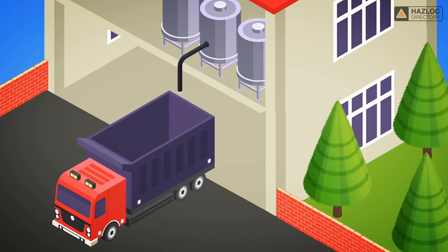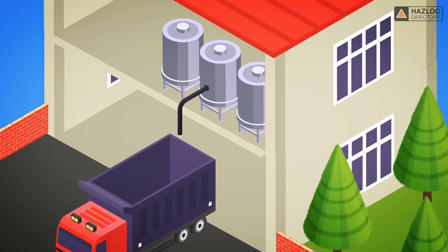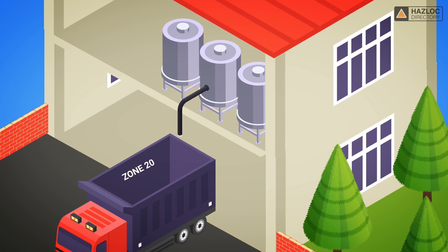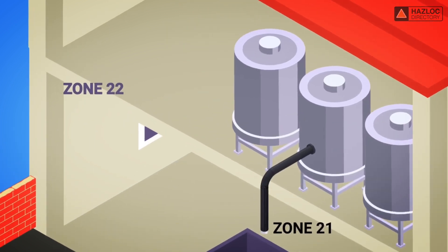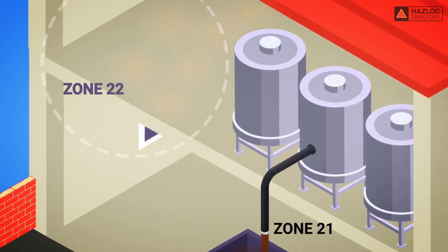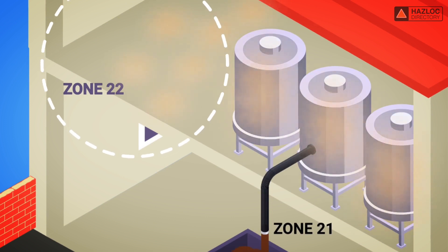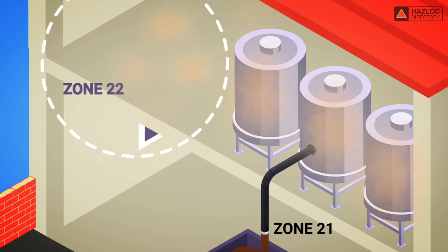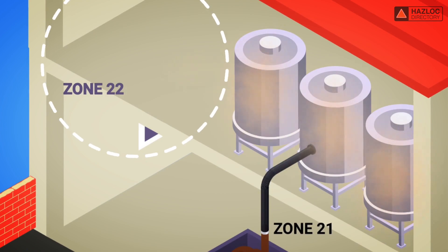The distinction among the three zones — 20, 21, and 22 — may be seen in this illustration. In this example, explosive clouds of dust can develop due to a tank malfunction, or rupturing or failure of the handling plant.